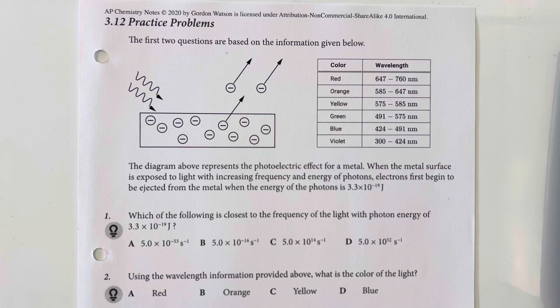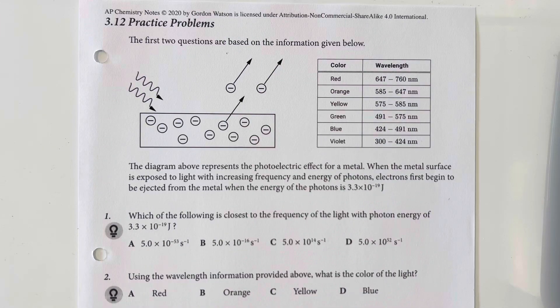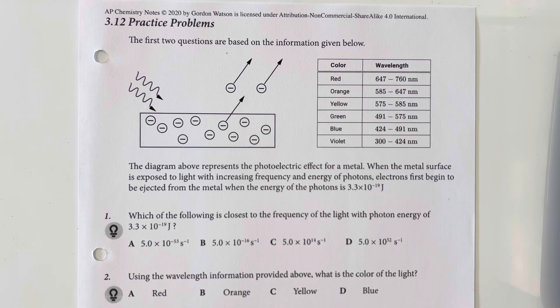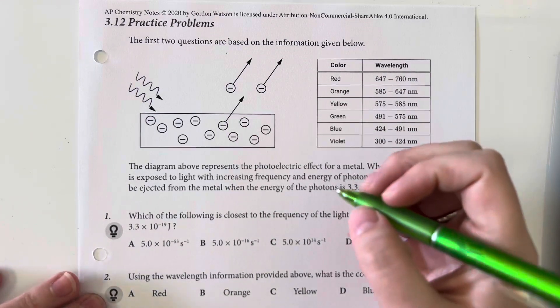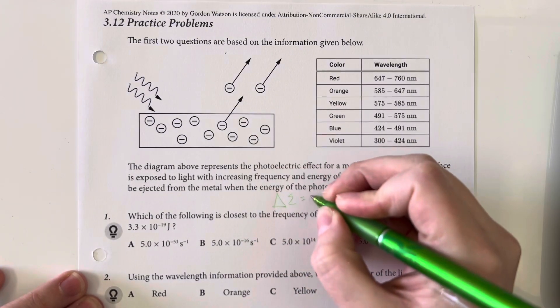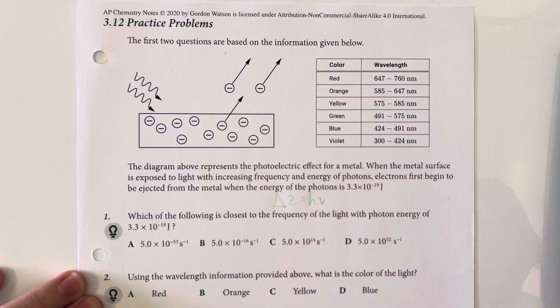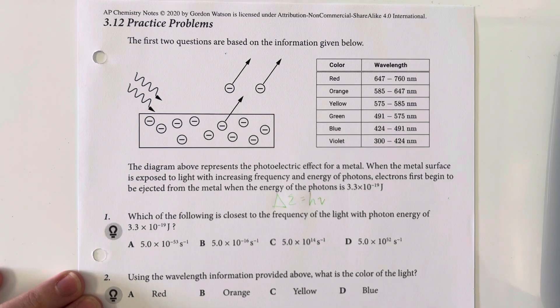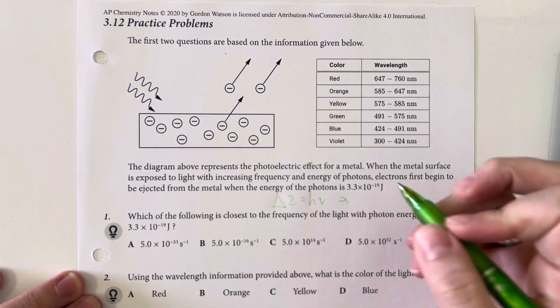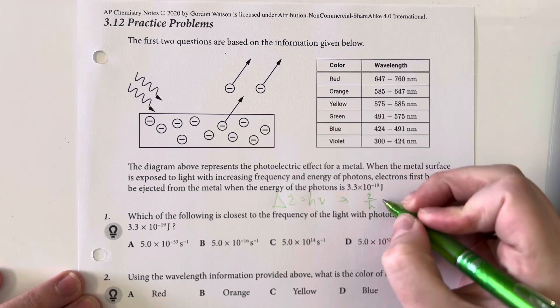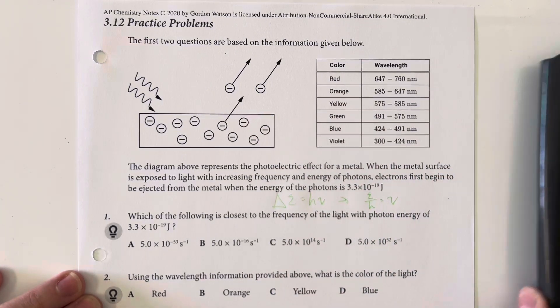So we need the relationship between frequency and energy. That is going to be that the energy is equal to Planck's constant times frequency. We need to rearrange for frequency. So we will divide our energy by Planck's constant. That will give us our frequency.